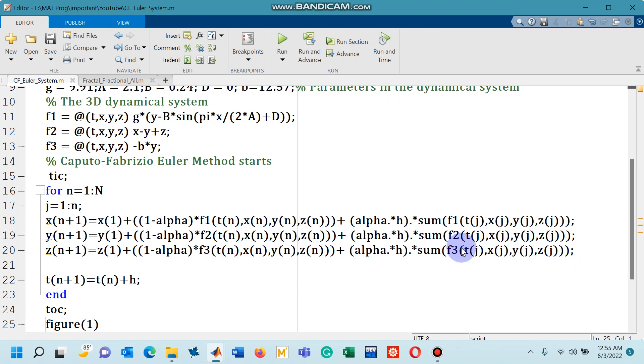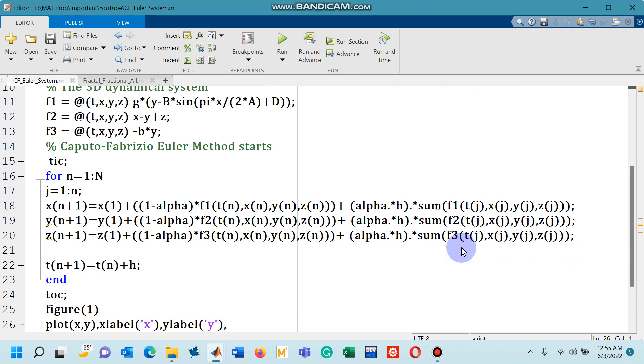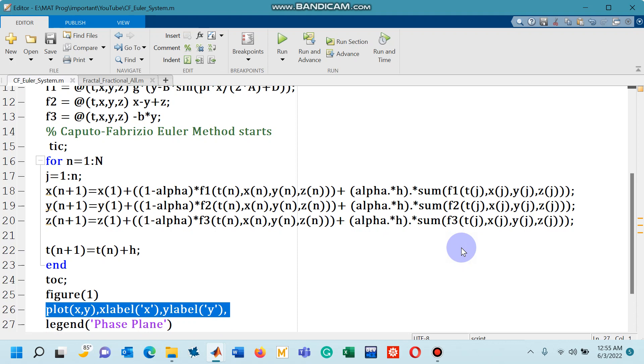So now in figure 1, as you can see on line number 26, I have given the command of plot to see the phase plane Y versus X and then with some X label and Y label along with the legend.